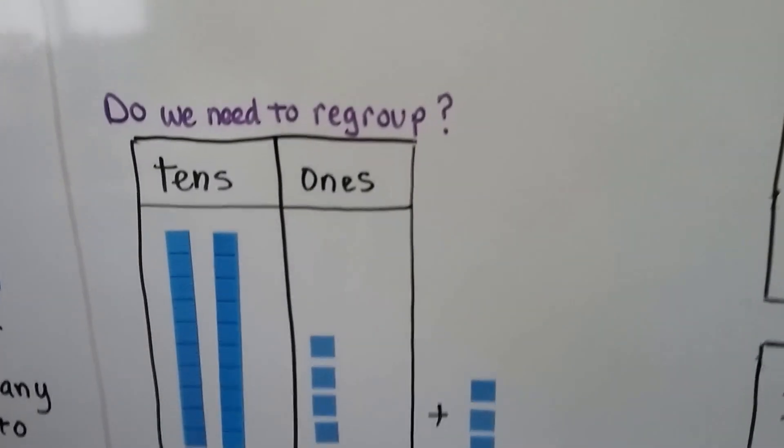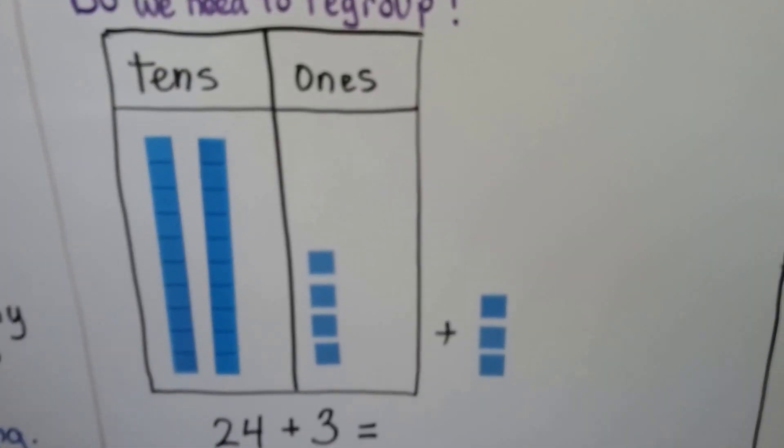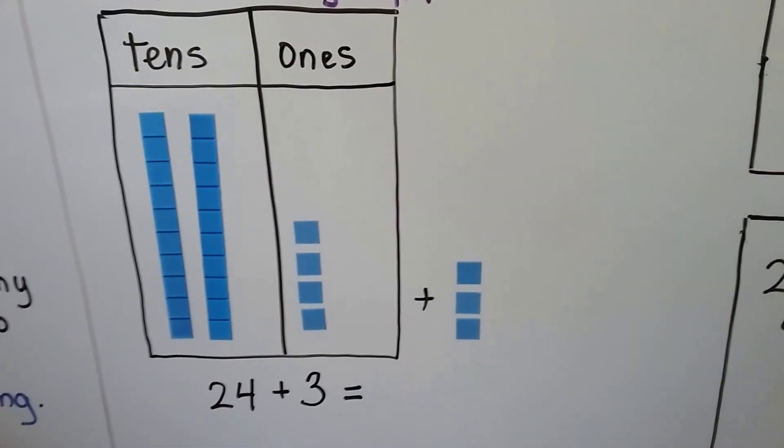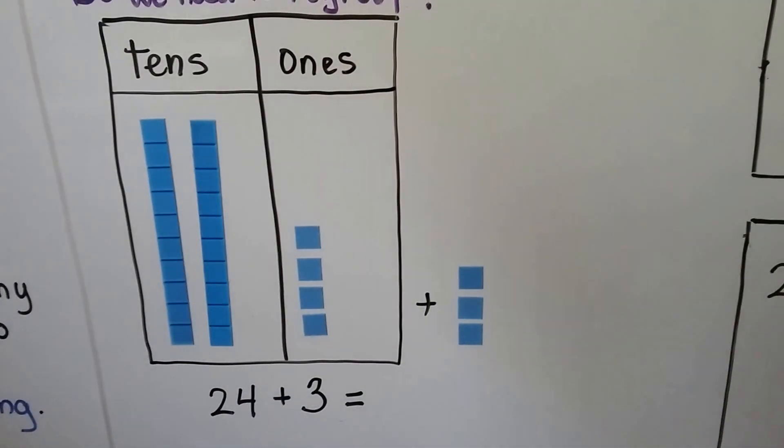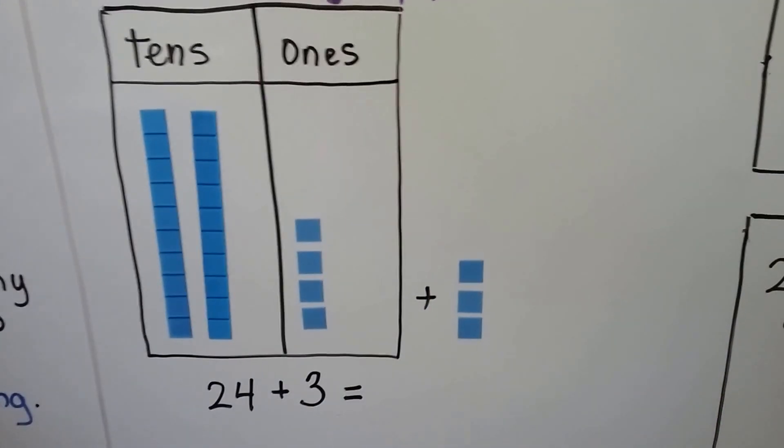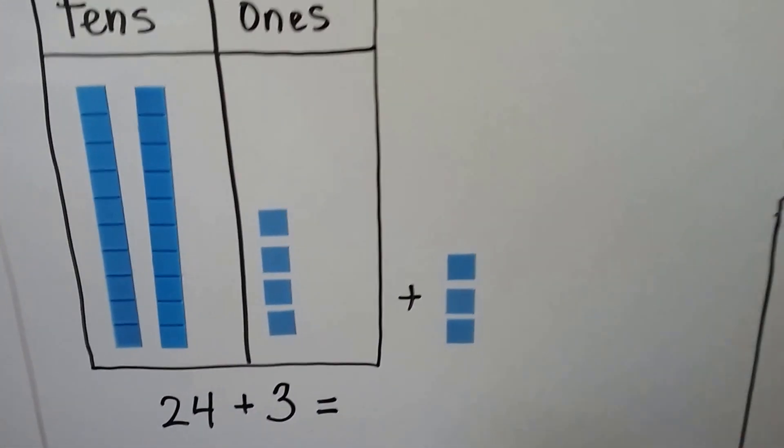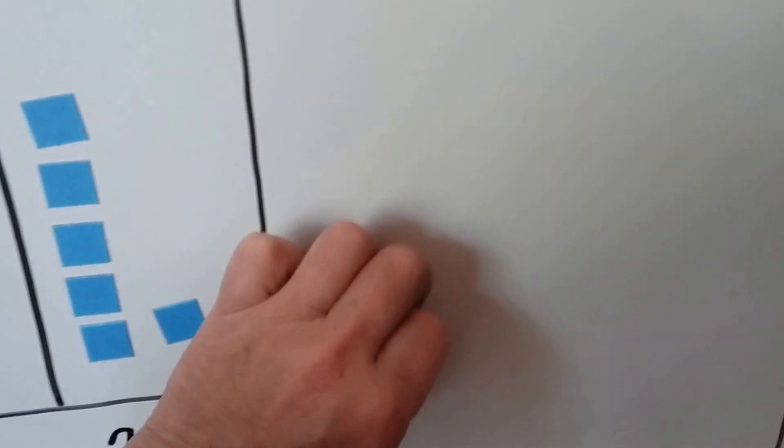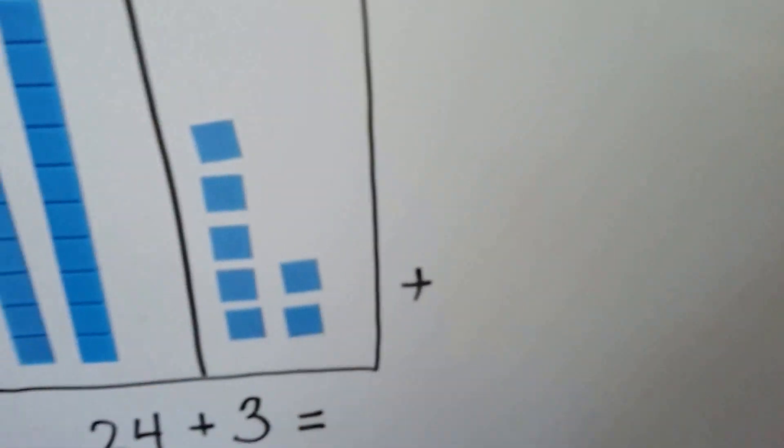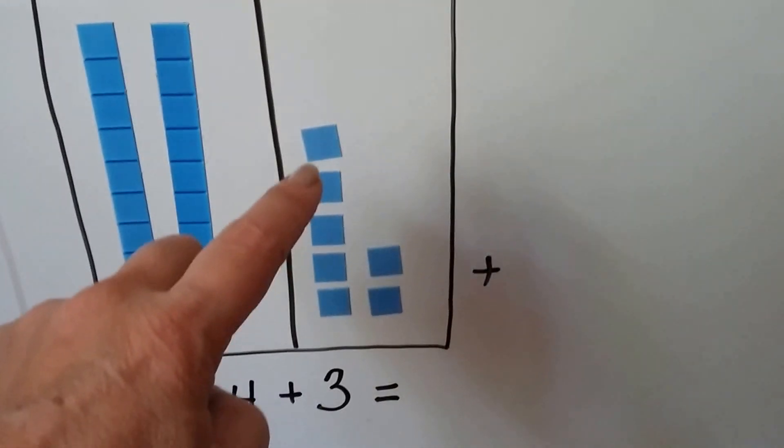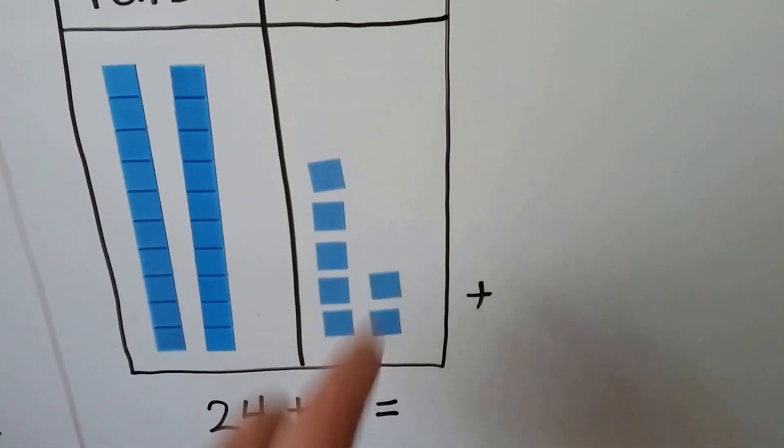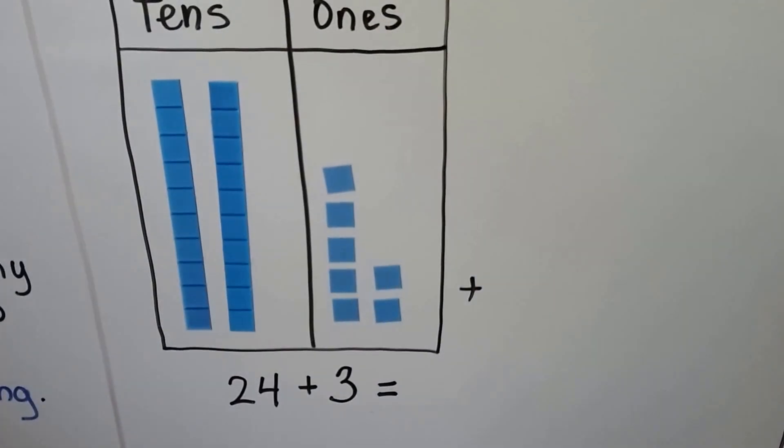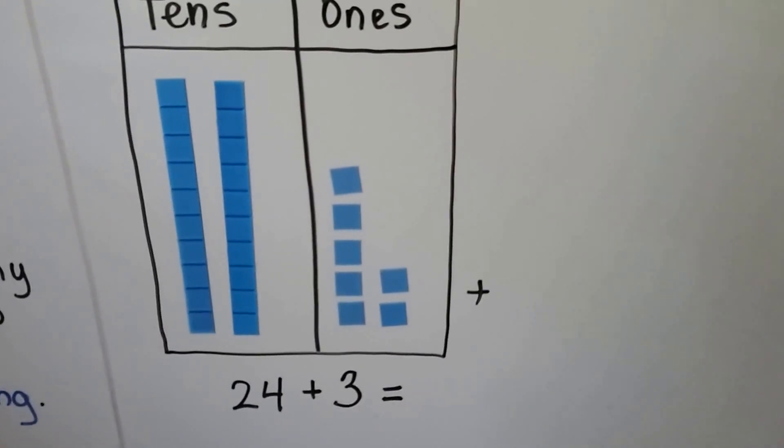Let's try it again. Now, do we need to regroup these numbers? We have 2 tens and 4 ones. That's a 24. We want to add 3 to it. When we add these 3 ones into the ones place. How many ones do we have? 1, 2, 3, 4, 5, 6, 7. Well, that's not enough to make a 10. So we have 2 tens and 7 ones. So we didn't need to regroup, did we?